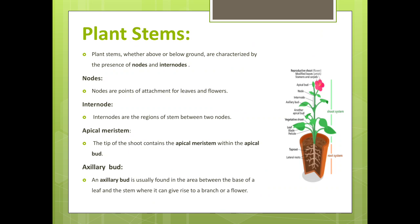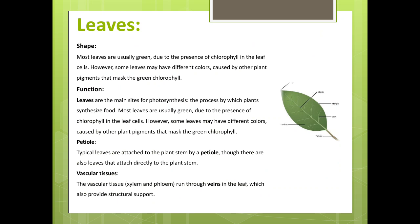The axillary bud is usually found in the area between the base of the leaf and the stem, where it can give rise to a branch or a flower. Leaves: most leaves are usually green due to the presence of chlorophyll in the leaf cells. However, some leaves may have different colors caused by other plant pigments that mask the green chlorophyll. Leaves are the main site for photosynthesis, the process by which plants synthesize food.